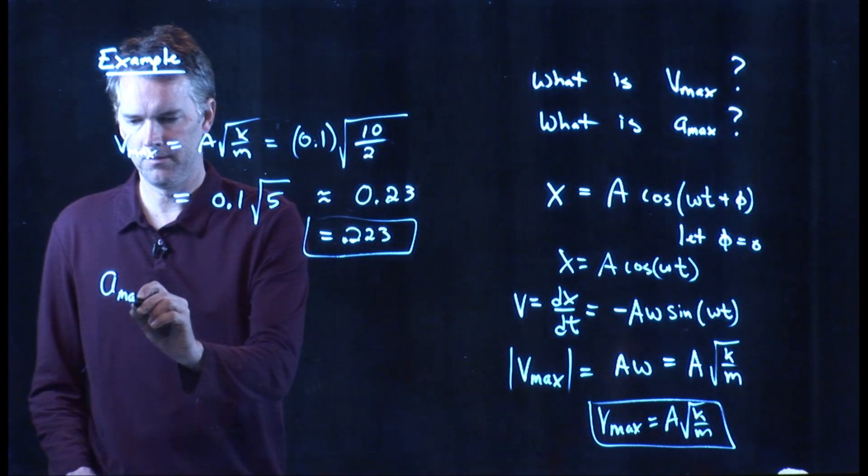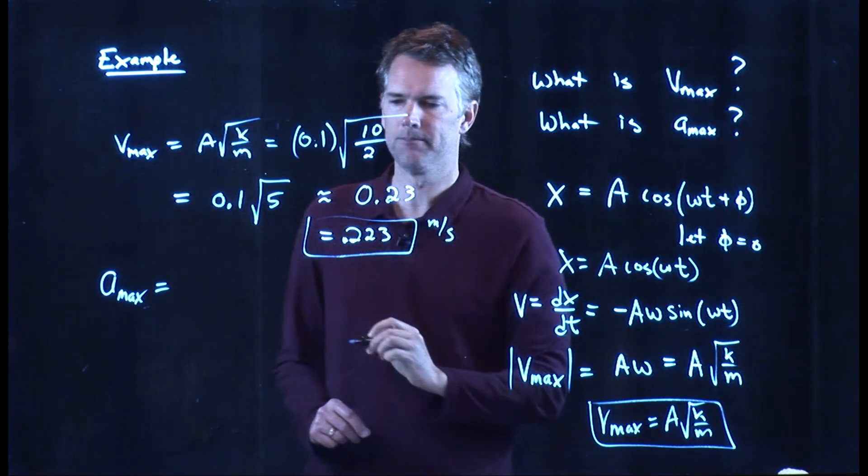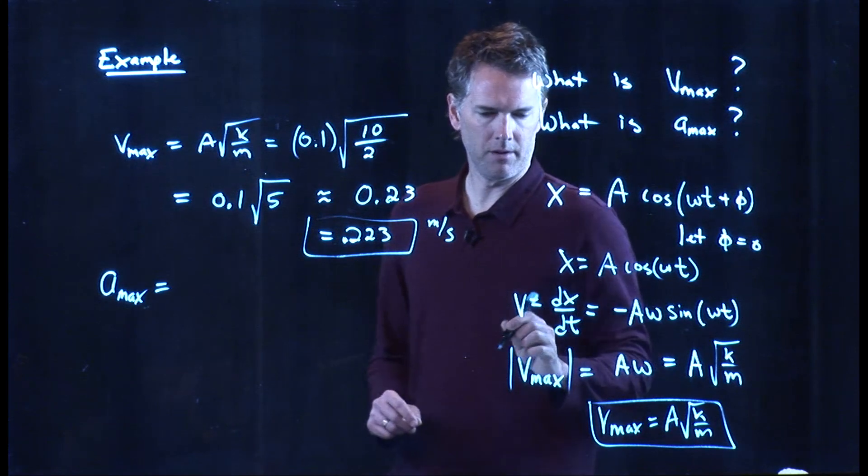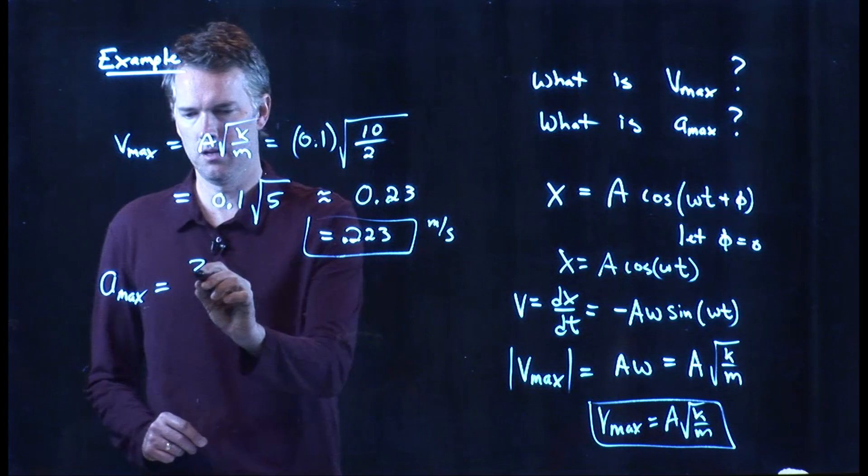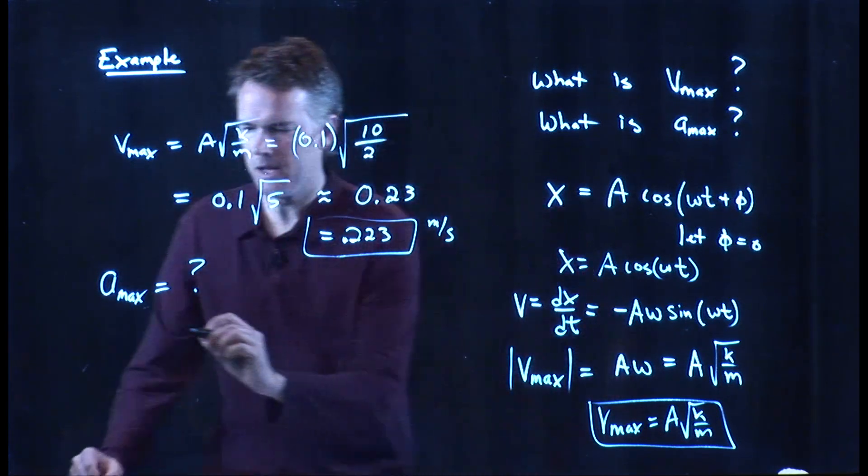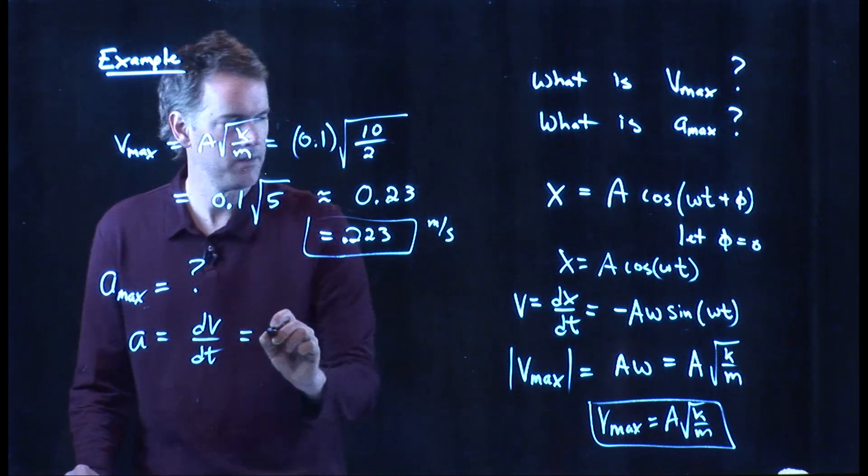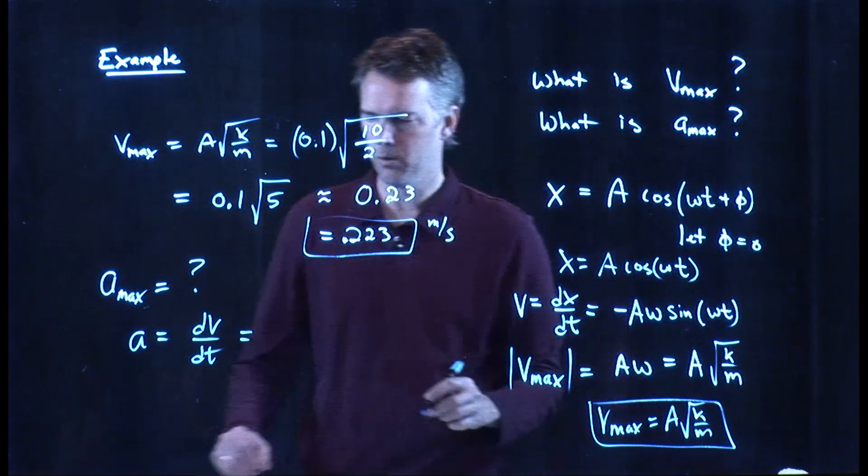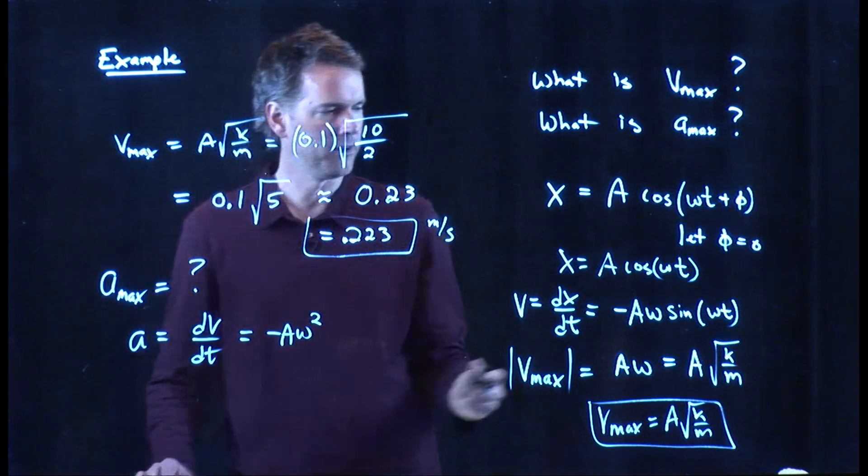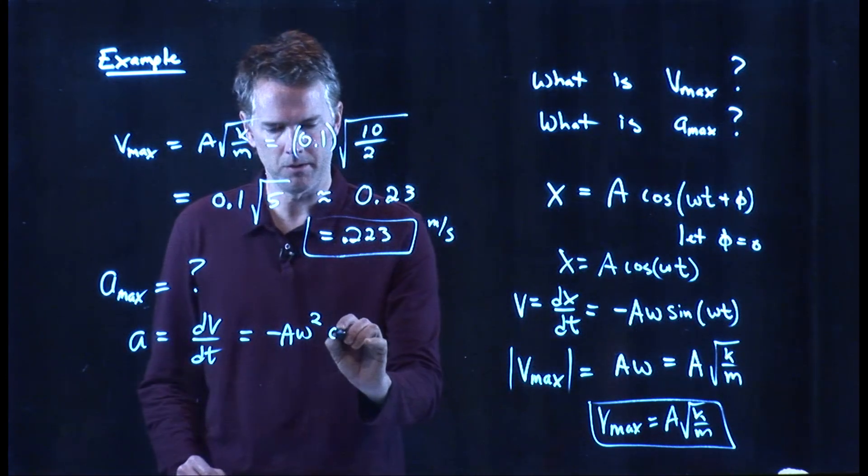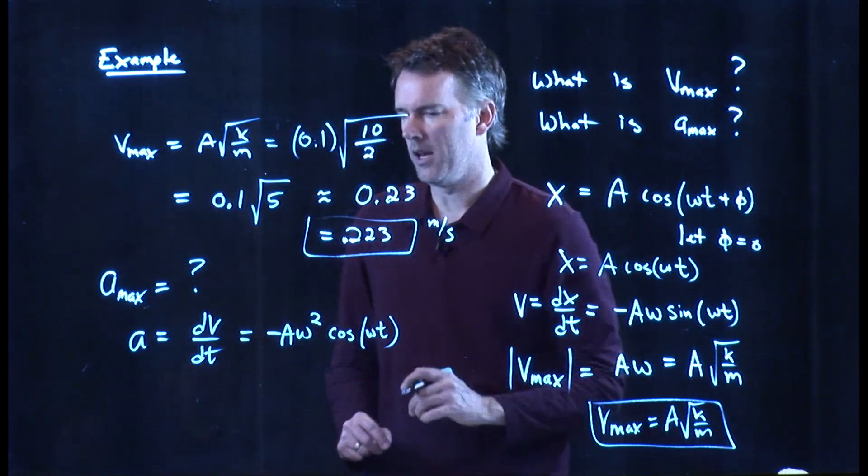All right. What about A max? A max. And the units on that are, of course, meters per second. What about A max? Well, to get A max, we have to go back to V. And we know that A is going to be a derivative of V. And we know what V is. It's right here. So, when I take a derivative of this thing, what do I get? I get negative A omega squared. I have to pull out another omega from the argument. And then the sine goes back to cosine.